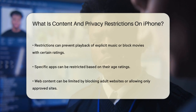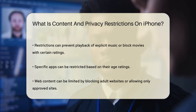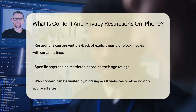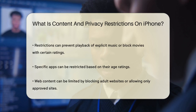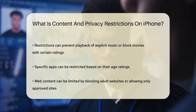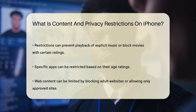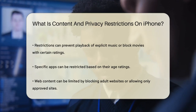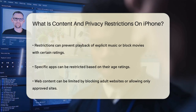Let's dive into what you can control with these restrictions. You can limit the types of content that can be accessed, such as music, movies, TV shows, books, and apps, based on their ratings. For example, you can prevent the playback of music with explicit content or block movies with certain ratings. You can also restrict access to specific apps, like those with inappropriate age ratings.